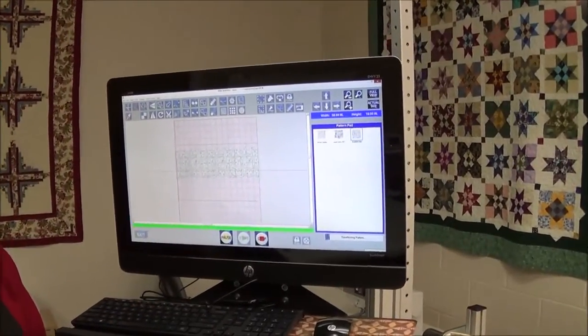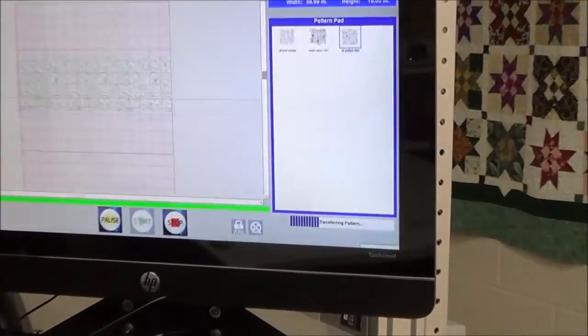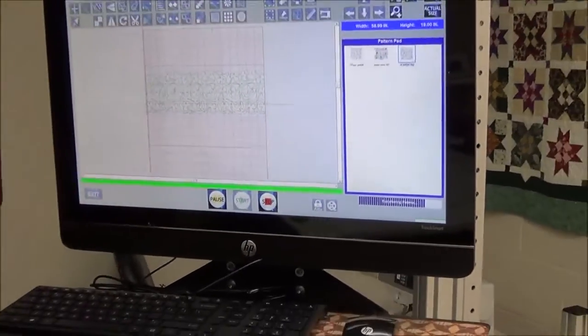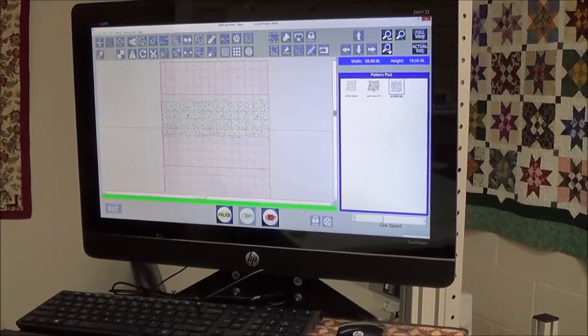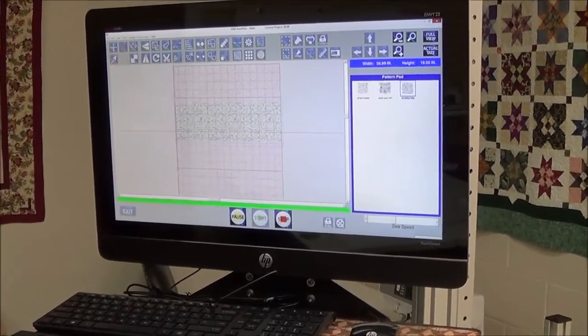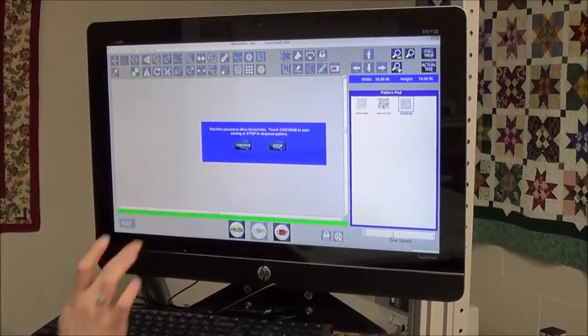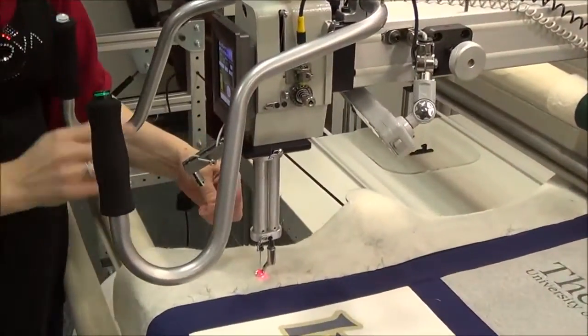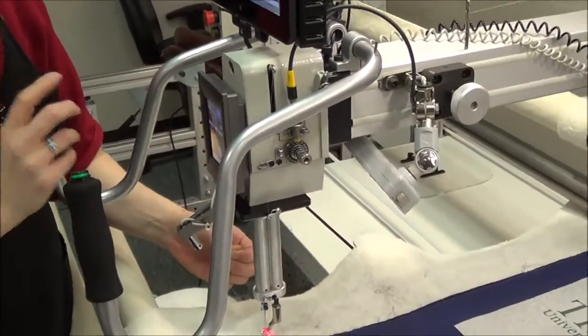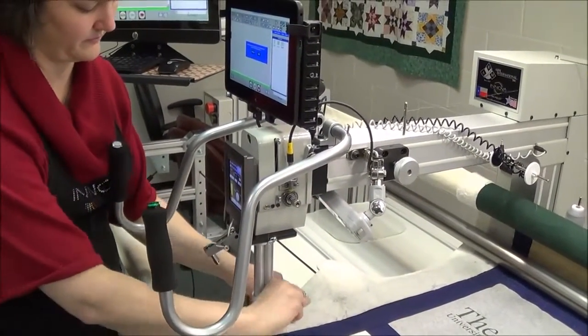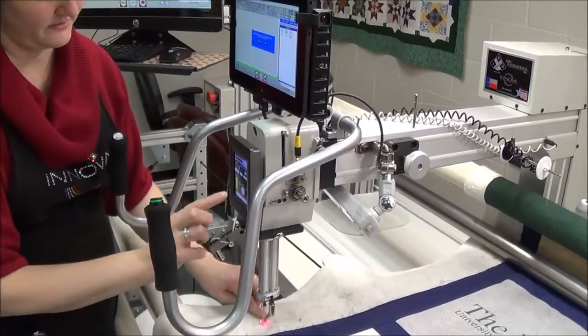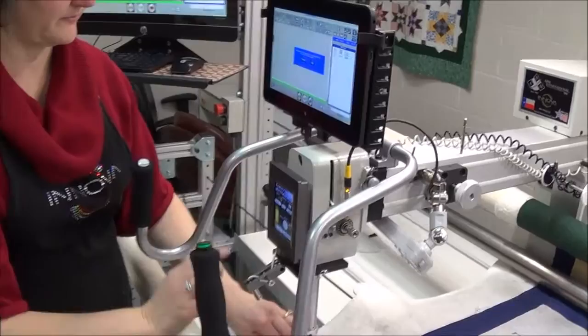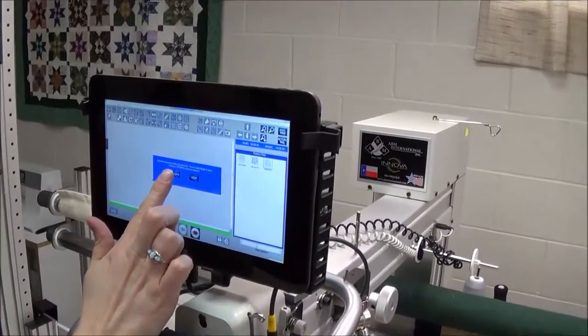I press start and it will transfer the pattern over and then the next command will prompt the machine to move to the start spot. It will pause so that I can bring up the thread and I'll use a few tie off stitches and then continue.